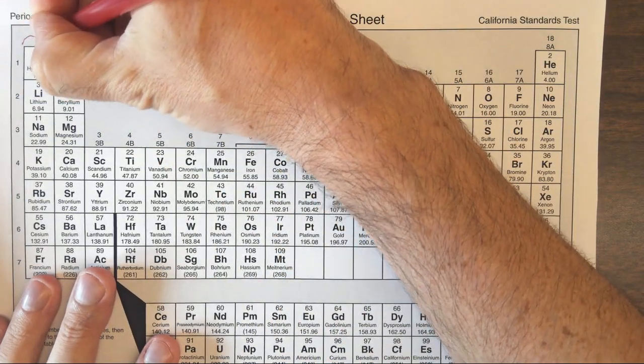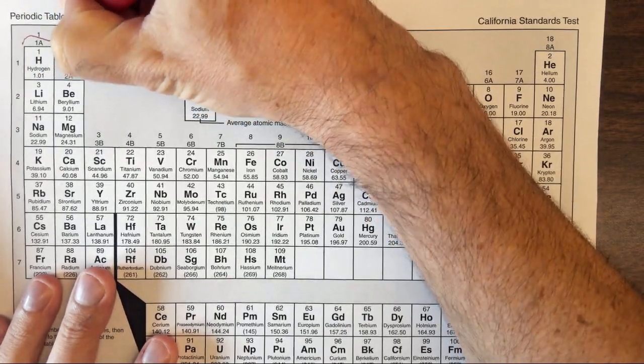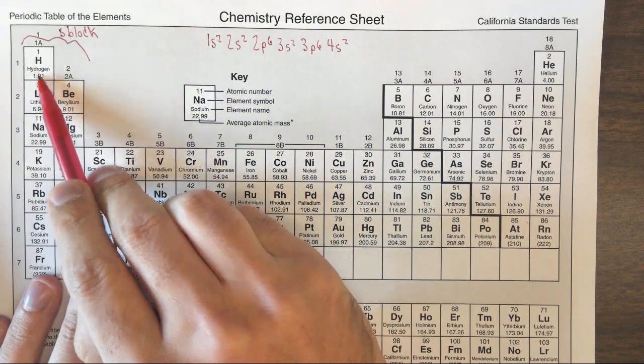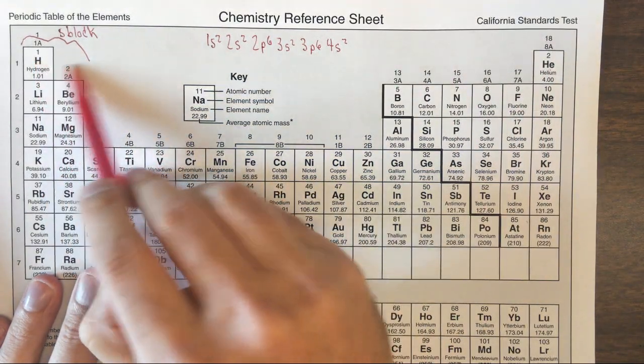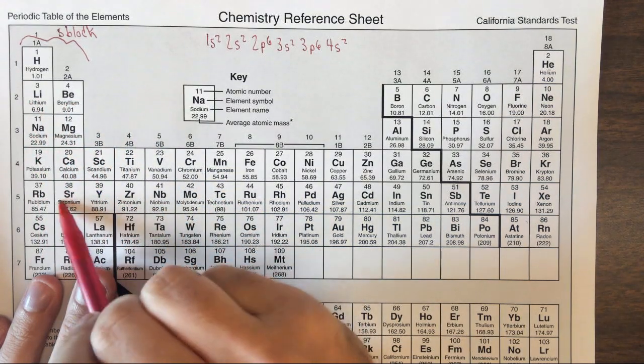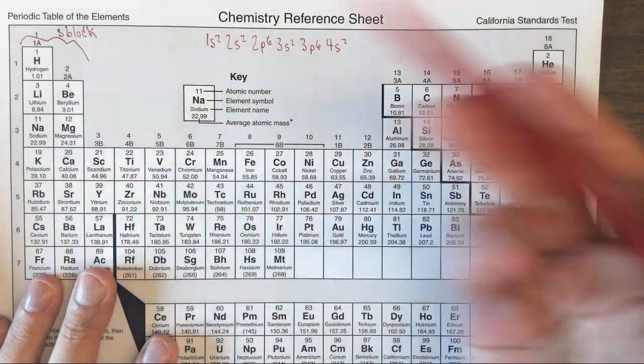These two orbitals are the s-block. So therefore, hydrogen and helium have 1s electrons, lithium and beryllium have 2s, then 3s, 4s, 5s, and so on. It's the period number, and then the s, that's the orbital.